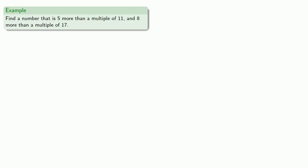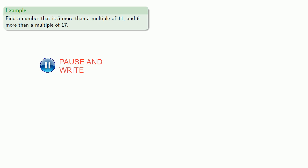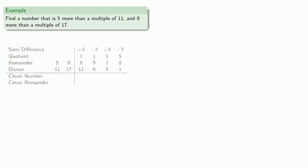Now while we can always start with the last column, sometimes we might not want to. So let's find a number that's 5 more than a multiple of 11 and 8 more than a multiple of 17. We'll set down our table. If we go all the way to the end, our last divisor is 1, so any number will work, and we could use 0 as our last clever number.